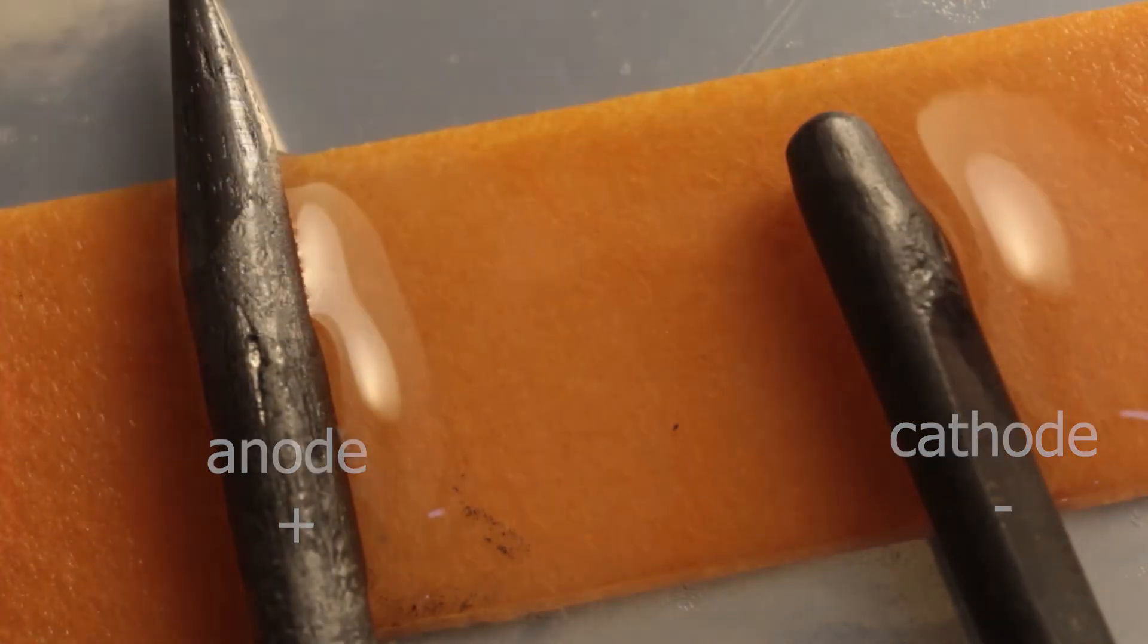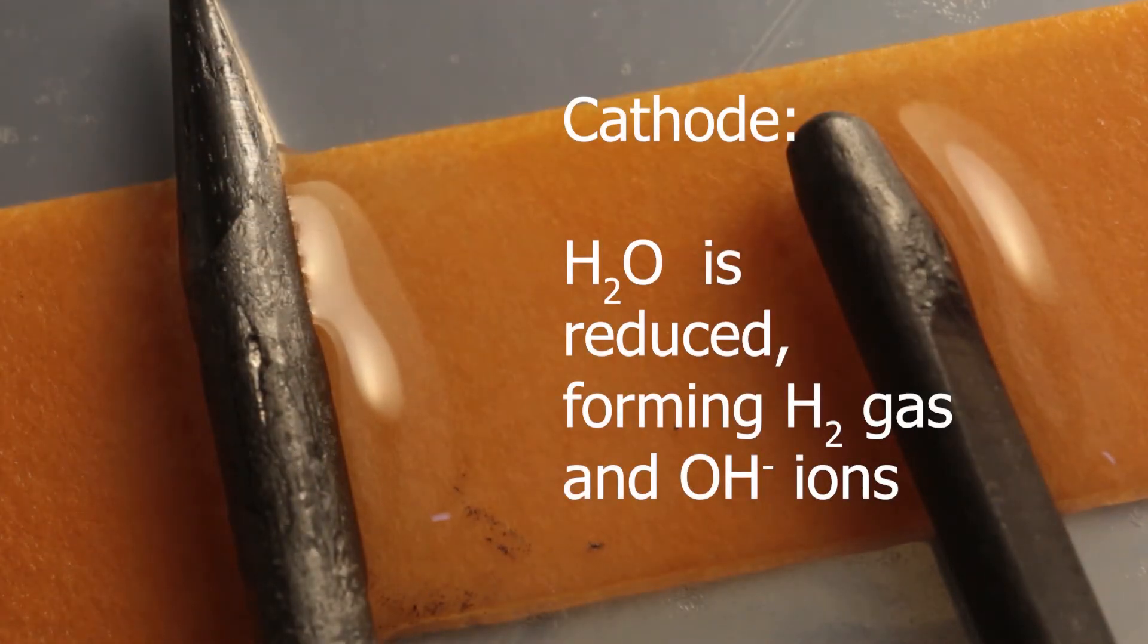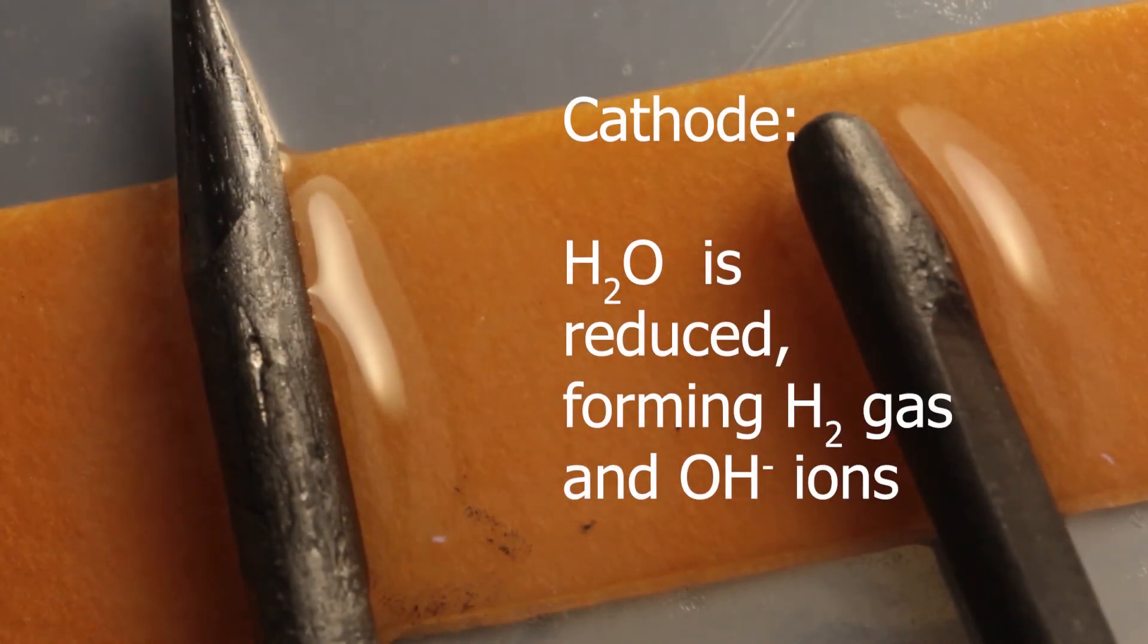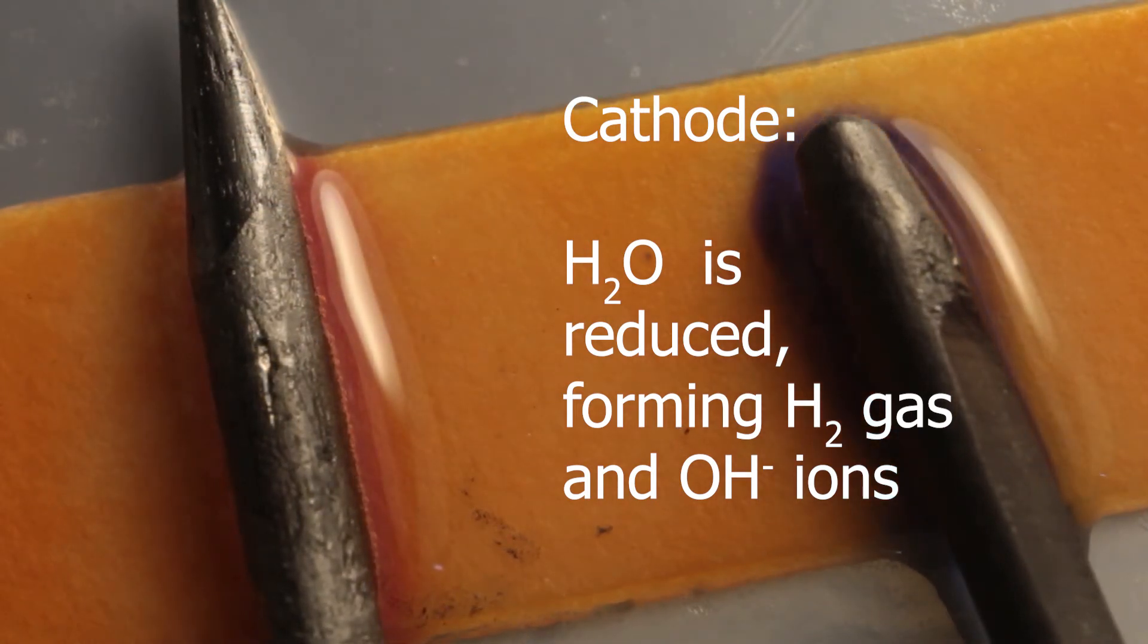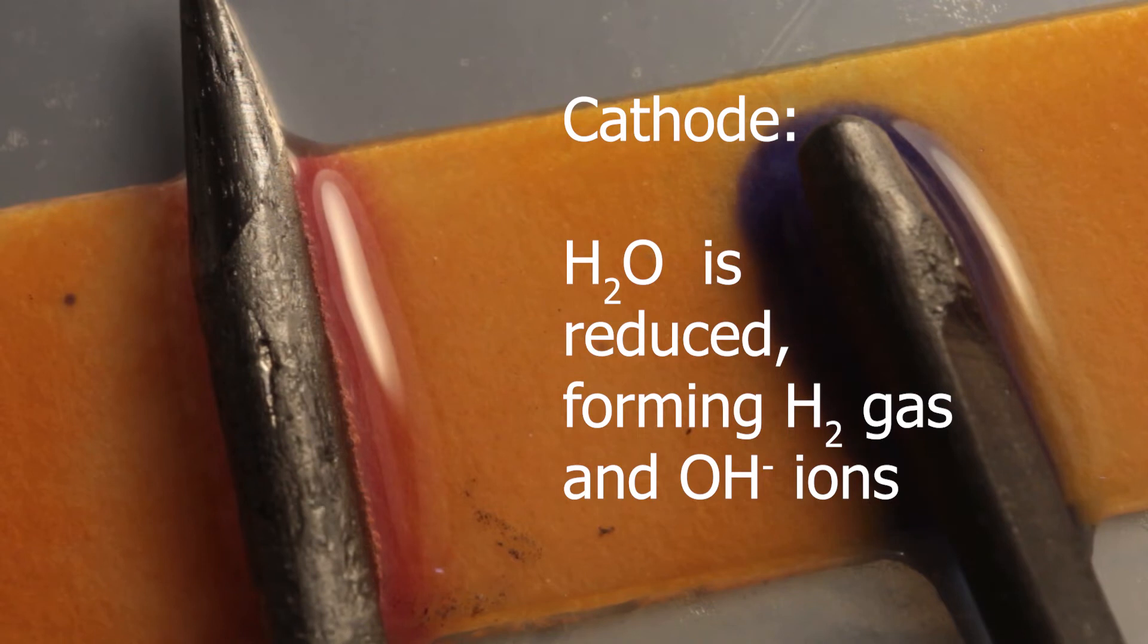So at cathode, water is being reduced, forming hydrogen gas. Because it's hydrogens in water which would receive electrons, hydroxides would be left behind, making medium alkaline.